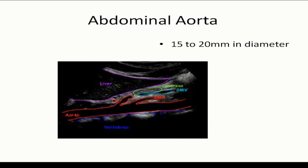Coming to the abdominal aorta, we must know the normal diameter whenever giving a diagnosis of stenosis, thrombosis, aneurysm, or dissection — these are the serious complications of aortic lesions. The normal diameter is around 15–20 mm, reducing as we go down towards the bifurcation. The aortic arch and descending aorta diameter is bigger, around 3 cm, but it reduces as we go down — always keep that in mind.